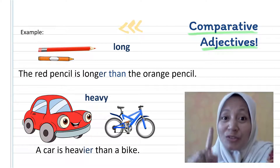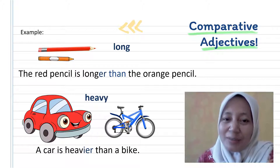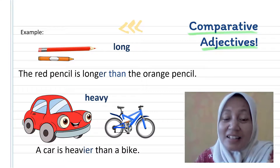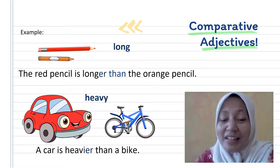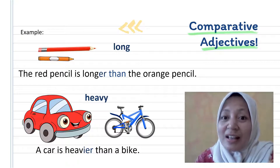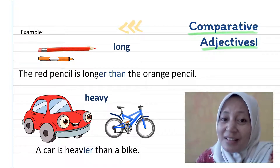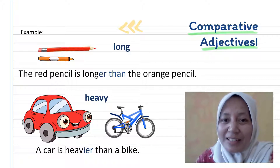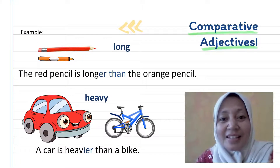Long has one syllable — a short word — so we just add -er at the end of the adjective, making it 'longer.' The sentence is: 'The red pencil is longer than the orange pencil.' Now let's see the second example.